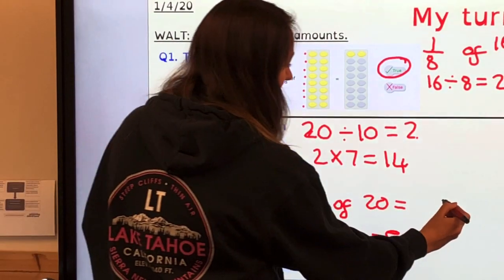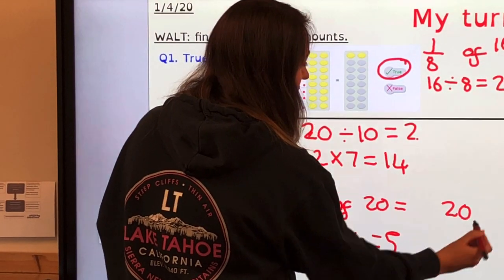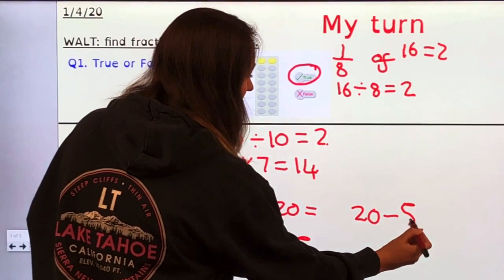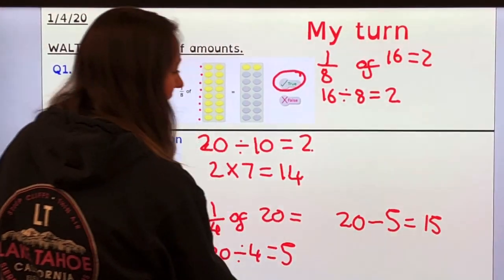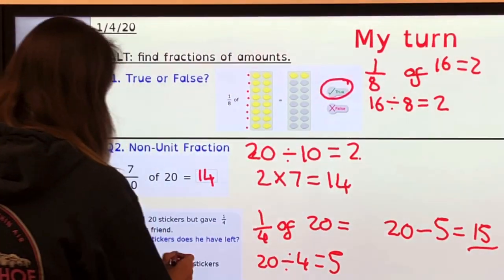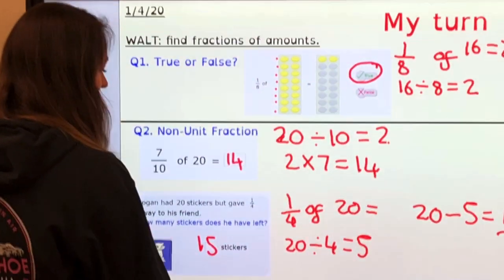Now I need to do my calculation of how many he's got left. 20 take away 5 equals 15. So he has 15 stickers left.